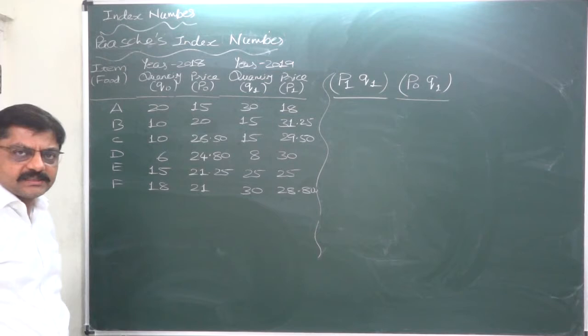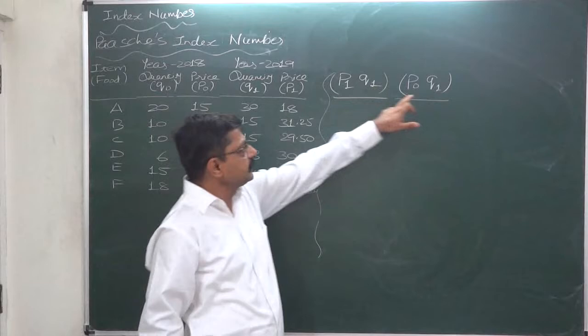So let's now go for Paasche's index number. We know that in case of Paasche's index number we need to consider the quantity consumed in the current year.